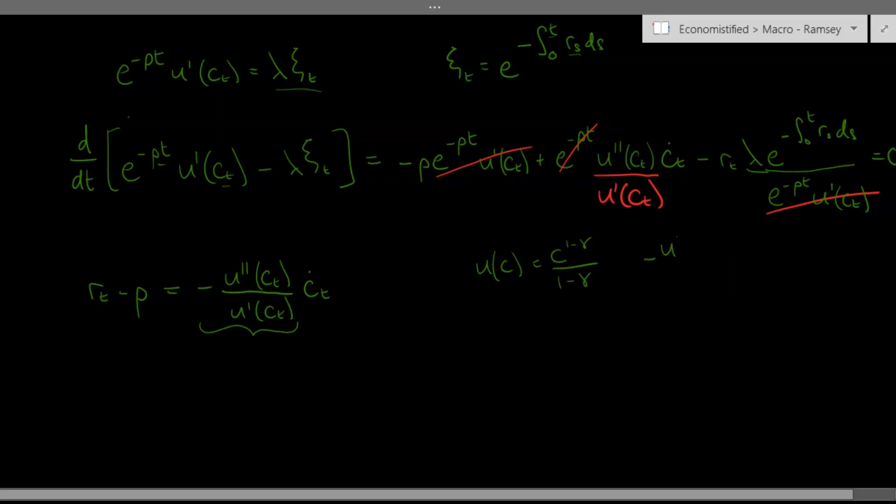we're going to find that u prime prime c over u prime c times c, so relative risk aversion, is just equal to gamma. Now this is not quite what we have here, we have u prime prime over u prime, but there's no c here. So this is just going to be equal to gamma over ct.